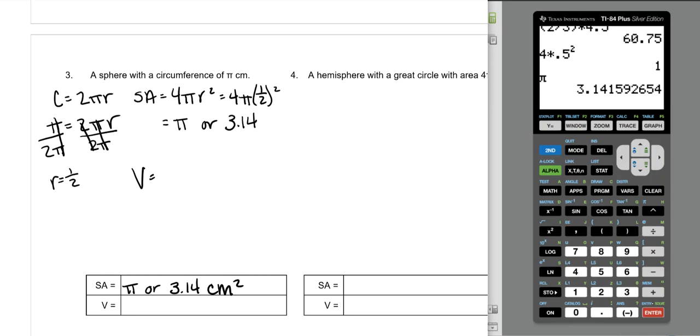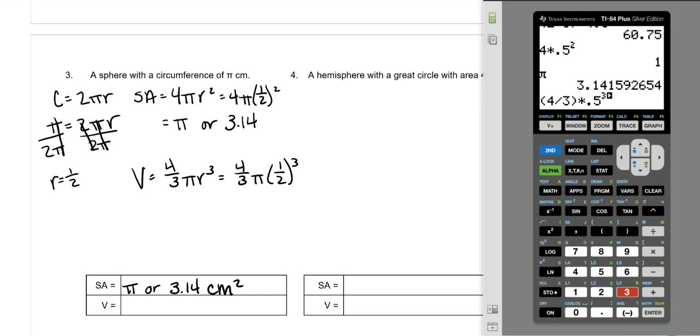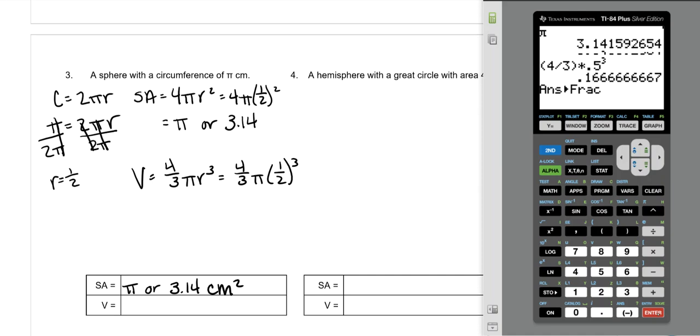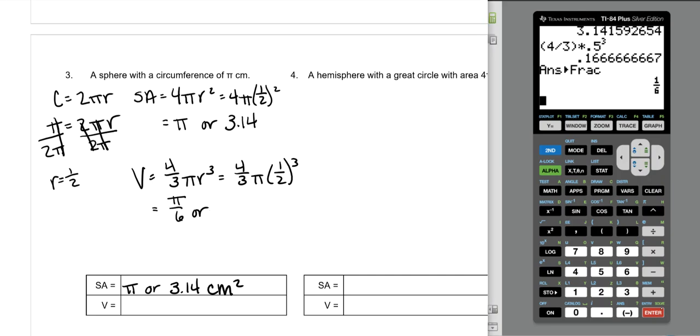Our volume is 4/3πr³. So 4/3π(1/2³). 4/3 times 1/2³ gives us a crazy decimal. So math, enter, enter, to give me a good fraction. This means that it's π/6.